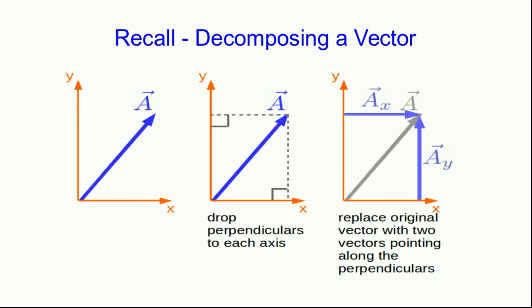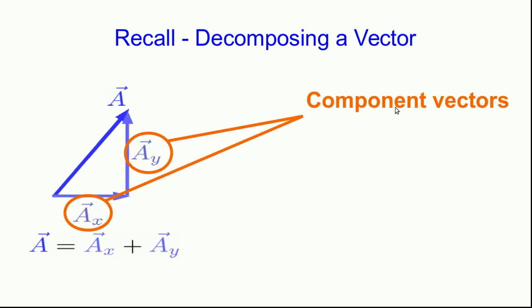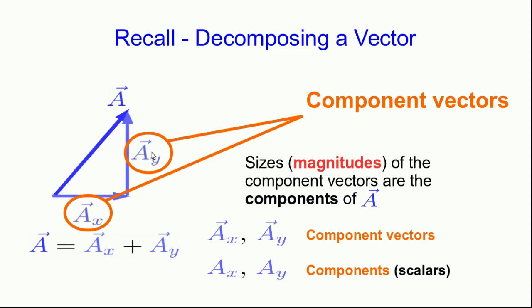We already know a lot about how to analyze motions in one dimension. Motions in two dimensions look more complicated, but we can approach analyzing them by thinking of them as two one-dimensional motions going on simultaneously. The only trick we need is decomposition of vectors, and we've already conceptually seen how to do that. If we have some vector a, we can drop perpendiculars from a onto our axes and draw vectors along them. Those two vectors add up to a, and we call them the component vectors — their magnitudes are the components of the vector. That's all vector decomposition means.